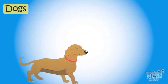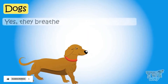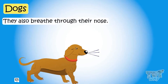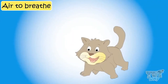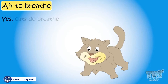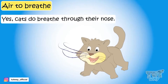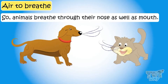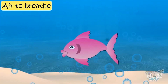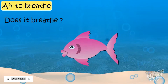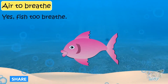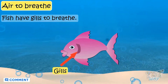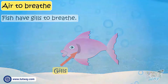Now let's see other animals. Dogs — do they breathe? Yes, they breathe. As they are living things, they also breathe through their nose. Here is a cat — does she breathe? Yes, cats do breathe. Cats also breathe through their nose. So animals breathe through their nose and can also breathe through their mouth. Now, fish is a living thing — does it breathe? Yes, fish do breathe. Fish breathe through their gills.